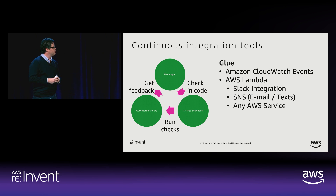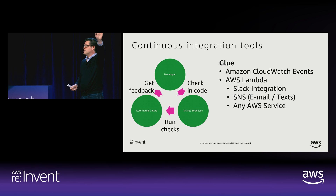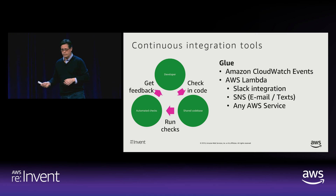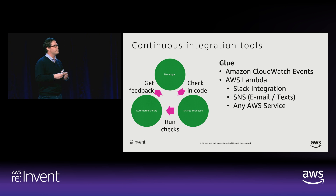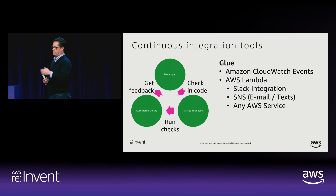We're going to fire off Lambda functions and update a Slack interface. Who uses Slack? Almost everybody. We're going to integrate it with Slack during the demo — Joe's going to show it. You can also do things like email and text messaging to notify your community, because you want to have that quick feedback loop and notify people what's happening in the build, the commit, and the deploy.